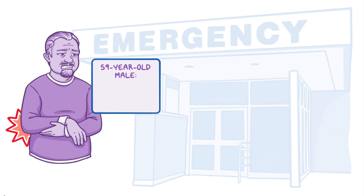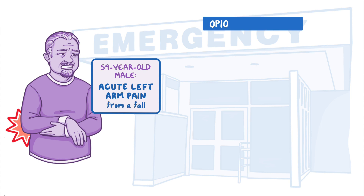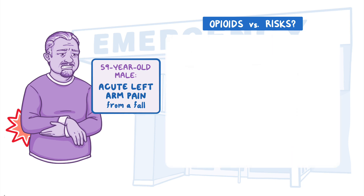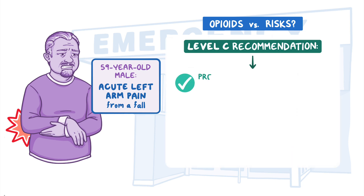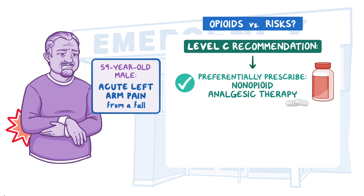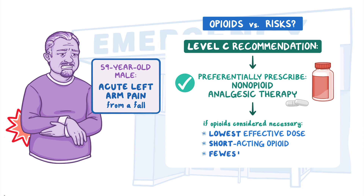Next, a 59-year-old male presents to the ED with acute left arm pain from a fall. Do the benefits of a short course of opioids outweigh the risks? The Level C recommendation is to prescribe non-opioid analgesic therapy, and treatment should include non-pharmacologic strategies as well. If opioids are considered necessary, the lowest effective dose of a short-acting opioid for the fewest days indicated should be prescribed. The CDC and ACEP agree this generally means three days or fewer.